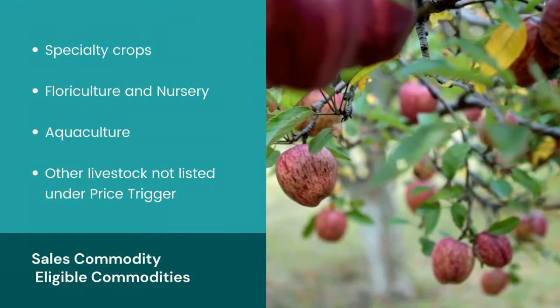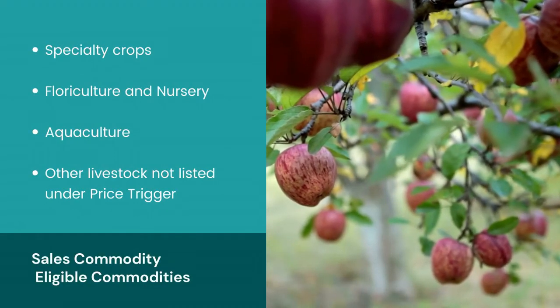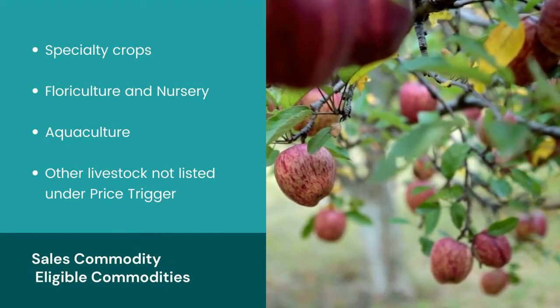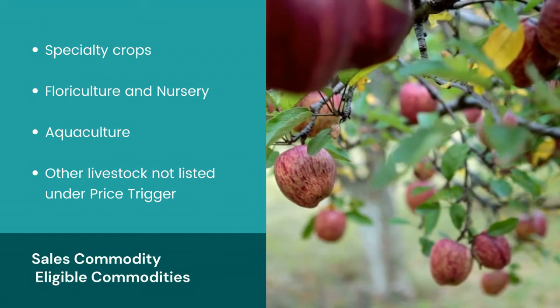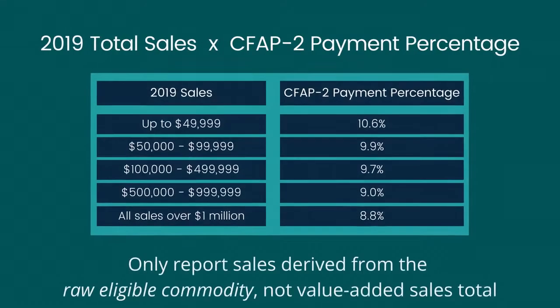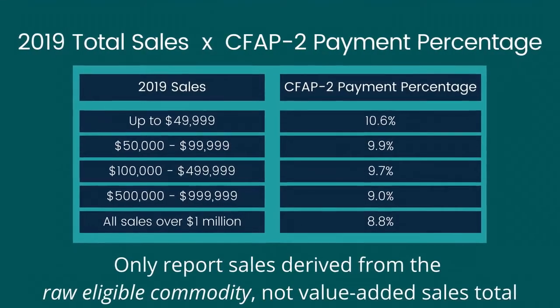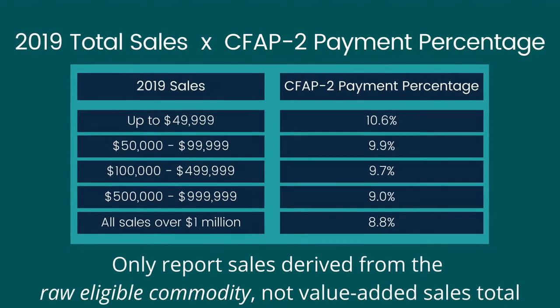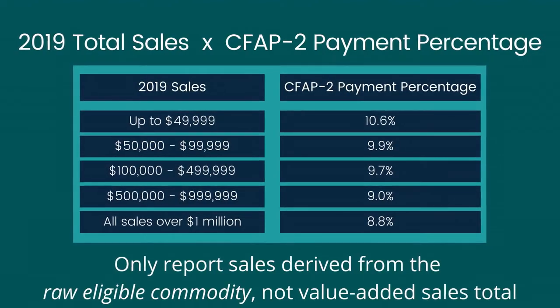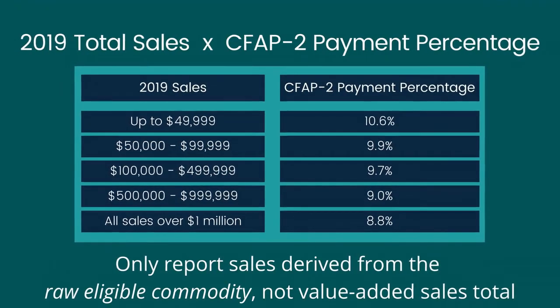Eligible commodities in this category include specialty crops, floriculture and nursery, aquaculture, and other livestock not listed under price-trigger. Payments are calculated based on eligible 2019 sales multiplied by payment rates shown here. It should be noted that farmers can only report sales based on the raw commodity, not a value-added product.